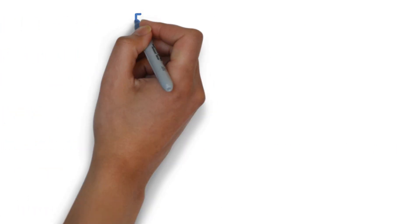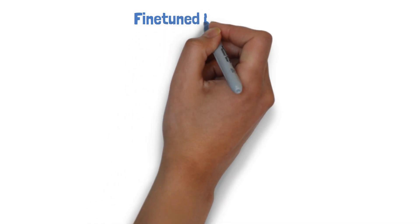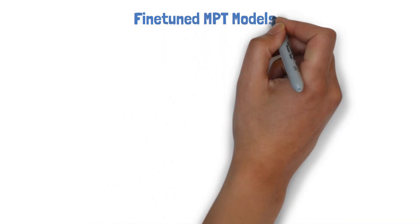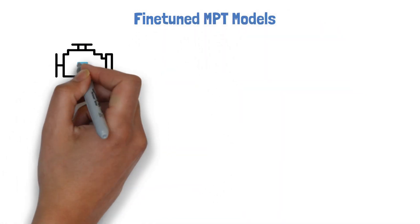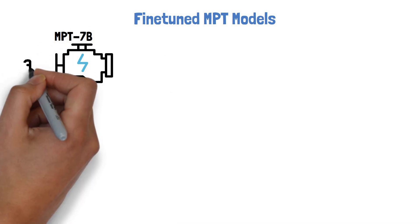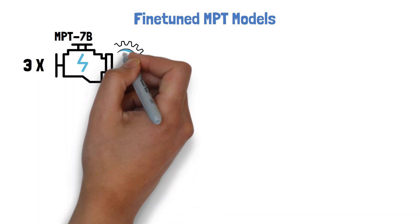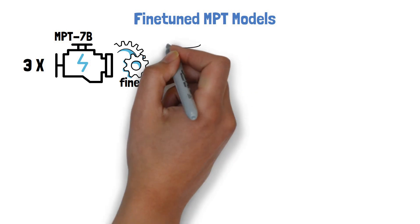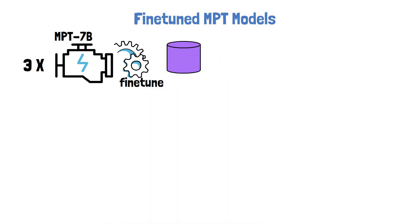To show what is possible with the MPT model, Mosaic also released 3 fine-tuned versions of the model. So they started with MPT-7B model 3 times, and each time they fine-tuned the model on different datasets according to the purpose of the fine-tuned model.